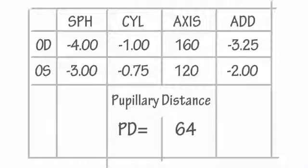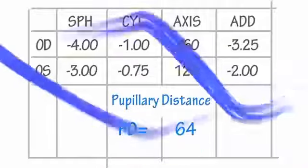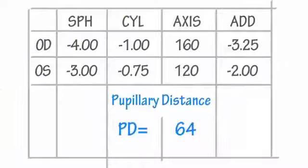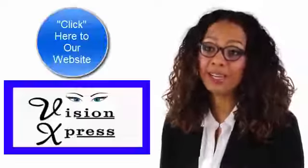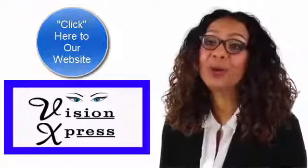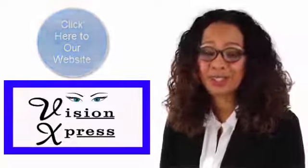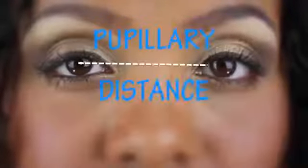And finally, we have PD, which means pupillary distance. PD simply means the distance between one pupil and the other. Now, if you're panicking because you don't have PD written on your prescription, don't worry. Please click here to check our tutorial on how to measure the distance yourself.